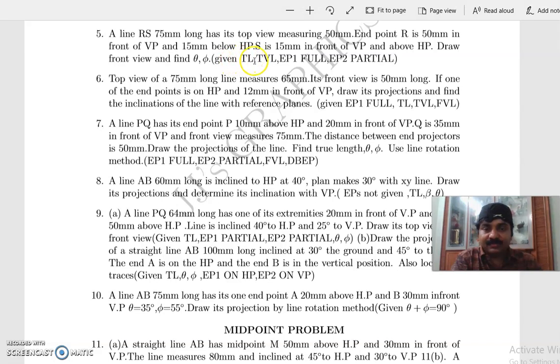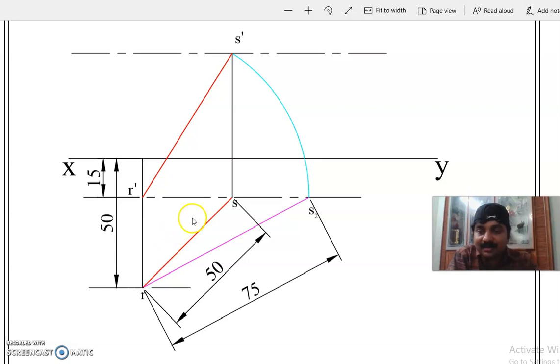So this is the question. We will do the problem. Here the data given for R is 15mm below HP and 50mm in front of VP.